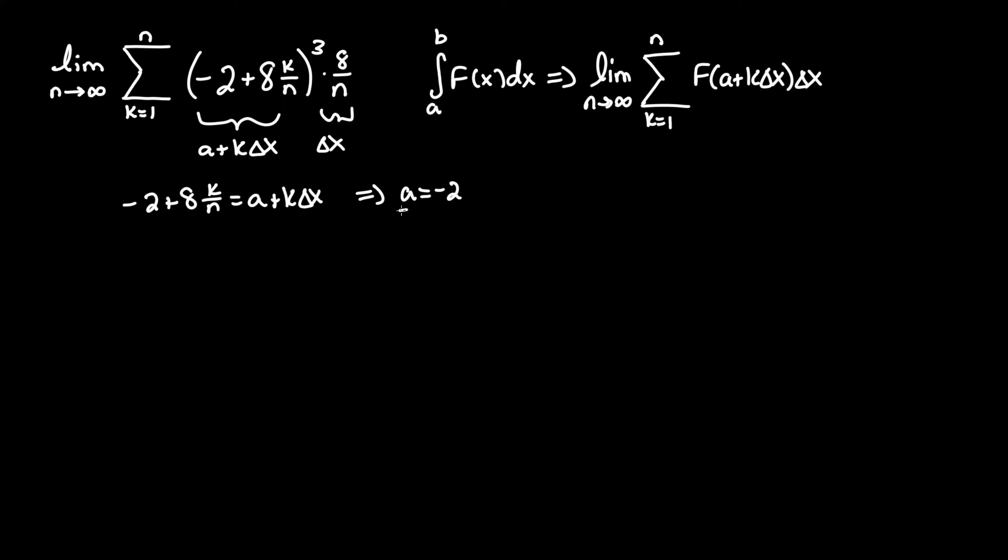a equals negative 2, delta x equals 8 over n which also equals, if you know for Riemann's sum, delta x is the same thing as b minus a over n many divisions. We can multiply both sides by n and have the statement 8 equals b minus a. This is just to find our upper boundary b since we already have a which is the point we start off from. Therefore b equals 8 plus a which equals 8 plus negative 2 which is the same thing as 8 minus 2, so b equals 6.